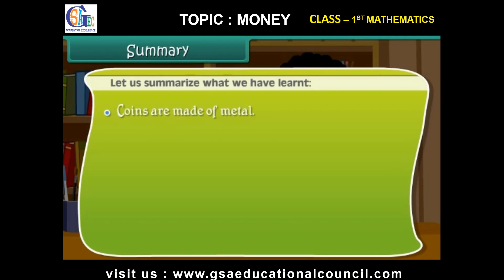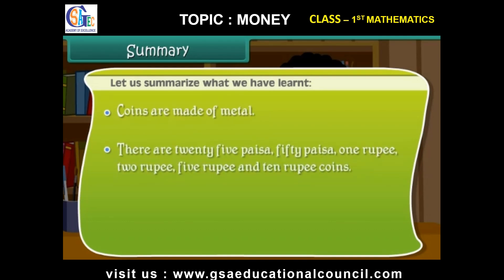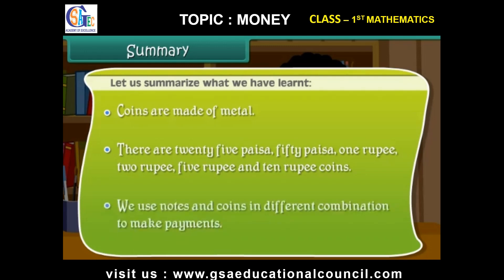Coins are made of metal. There are 25 paisa, 50 paisa, 1 rupee, 2 rupee, 5 rupee and 10 rupee coins. We use notes and coins in different combinations to make payments.